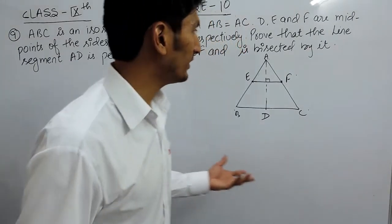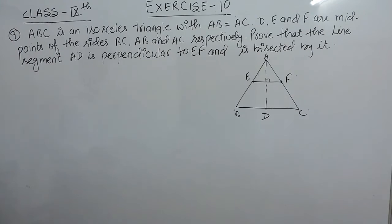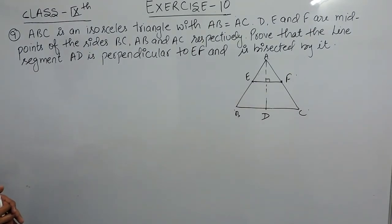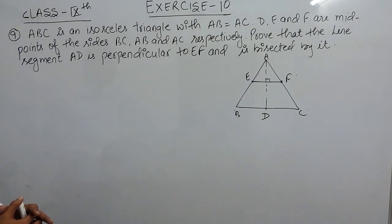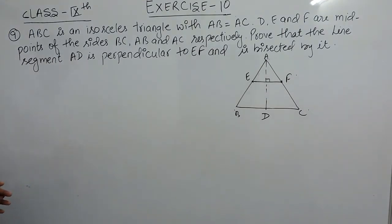Hello everyone. In this video we are going to solve question number 9 of exercise 10. In this question you are given a triangle ABC which is an isosceles triangle with AB equals AC, and D, E, and F are the midpoints of sides BC, AB, and AC respectively. You have to prove that the line segment AD is perpendicular to EF and is bisected by it.